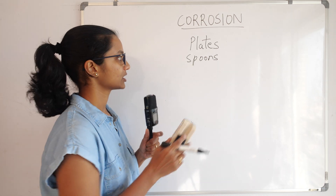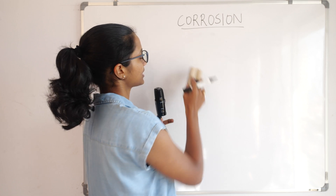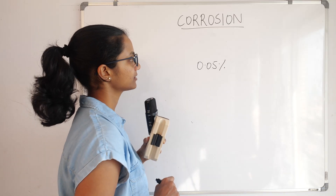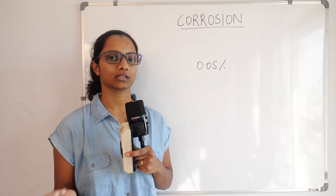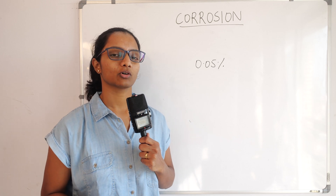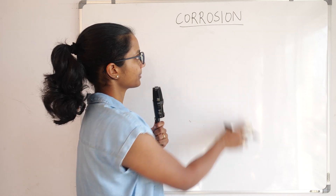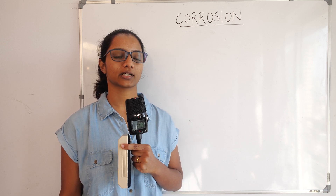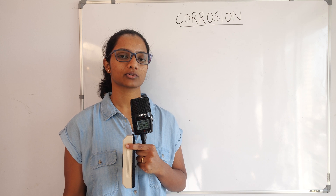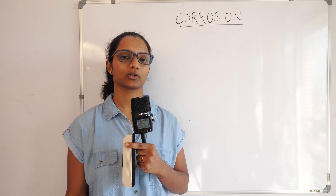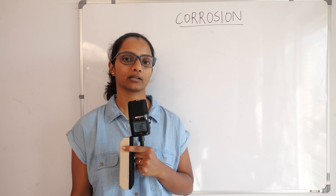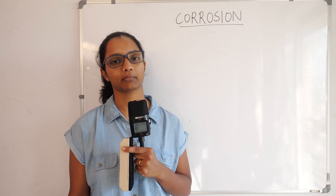Pure iron is not used because it is very soft and also stretches with heat, so it is mixed with 0.05% carbon to make iron products. There are a lot of benefits of mixing two metals to make useful products. By this, I hope you have understood the topic of corrosion, which concludes the chapter on metals and non-metals. Drop your comments and suggestions below and I'll see you in my next science topic.